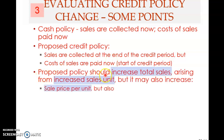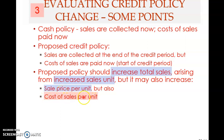The proposed policy should increase total sales — that is a positive effect. This increase may arise from increased sales units, and the company may also be able to increase the sales price per unit. But the cost of sales per unit may also increase, which is a negative. So the increase in total sales may be due to increased sales units, higher sales price per unit, or changes in cost of sales per unit.